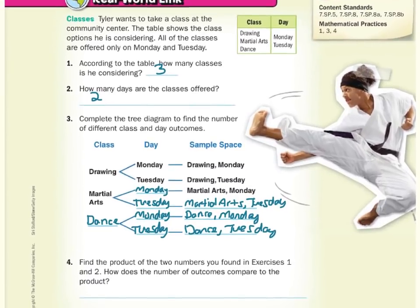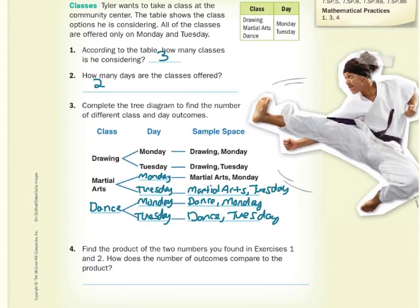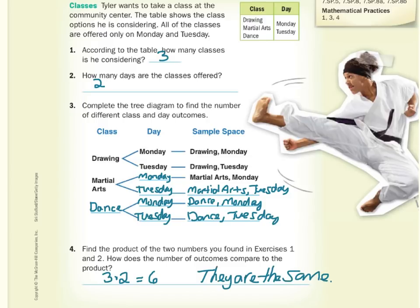Find the product of the two numbers you found in exercise one and two. Well, that would be three times two, and that is equal to six. How does the number of outcomes compare to the product? The number of outcomes in our sample space — six total — they are the same. So we multiplied the number of possibilities for classes by the number of possibilities for days, three times two to get six, and that matched the number of outcomes after making the tree diagram.